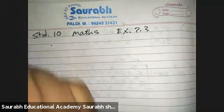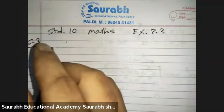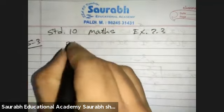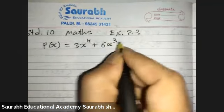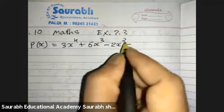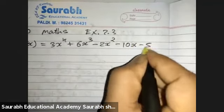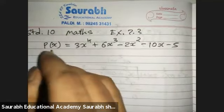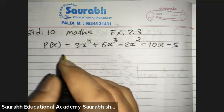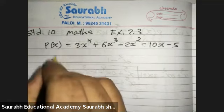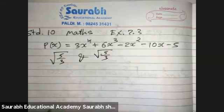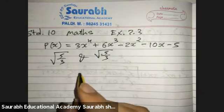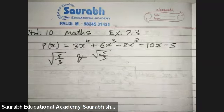Math exercise 2.3, sum number three: obtain all other zeros of a polynomial. You are given p(x) = 3x⁴ + 6x³ - 2x² - 10x - 5. Two zeros are already given: √(5/3) and -√(5/3).